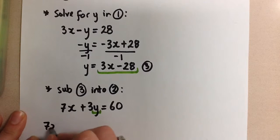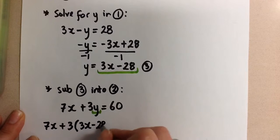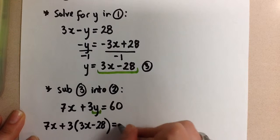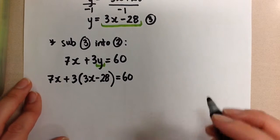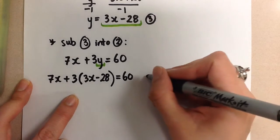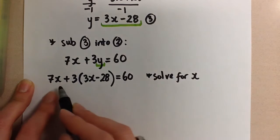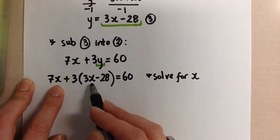It's going to look like this. 7x plus 3, get your brackets, sub in, 3x minus 28. So now you see instead of the y, we wrote 3x minus 28, and we still have the equal 60 on the other side of the equation. So now I'm going to solve for x. Now that makes sense, because look at what we have left in this equation. We only have an x variable left. There is no y here, so we must expand, simplify, and solve for x.